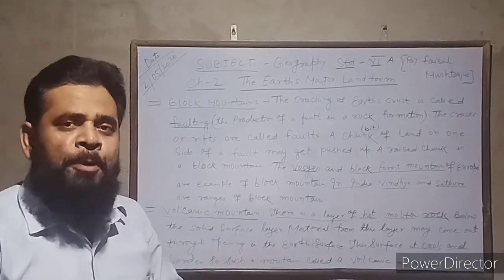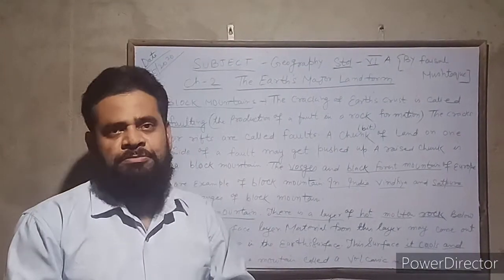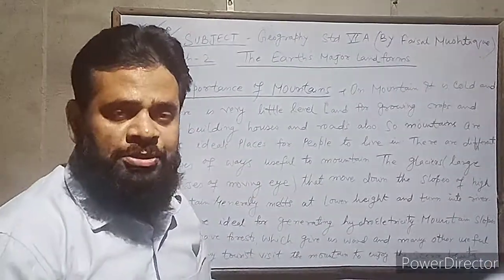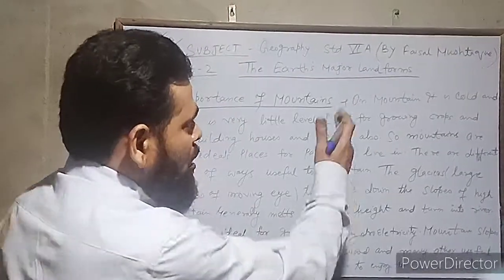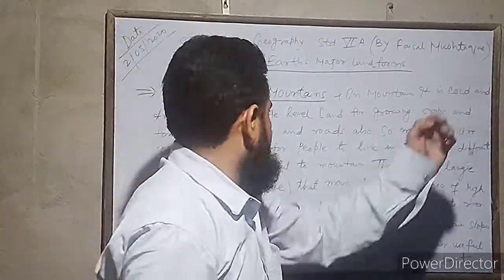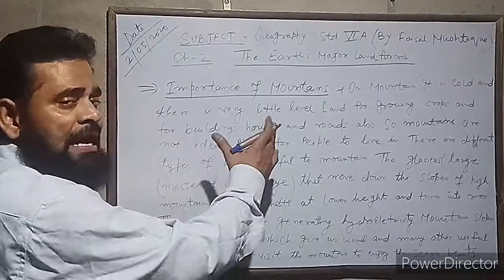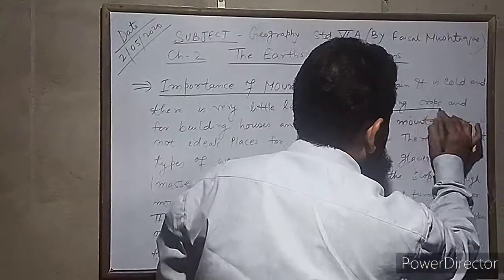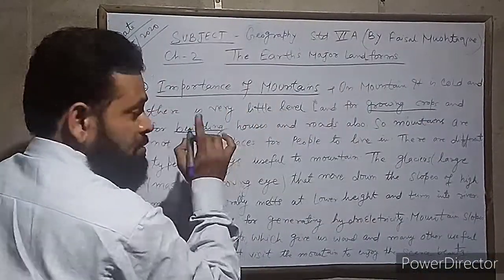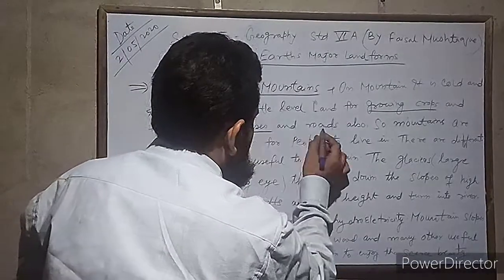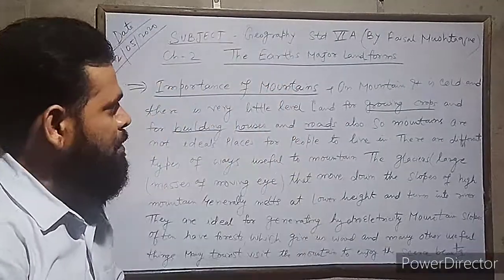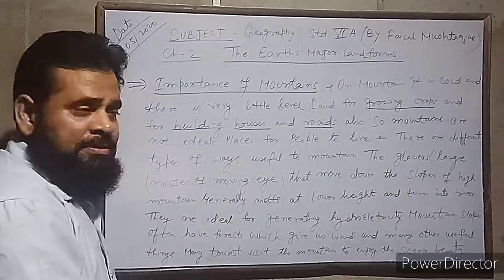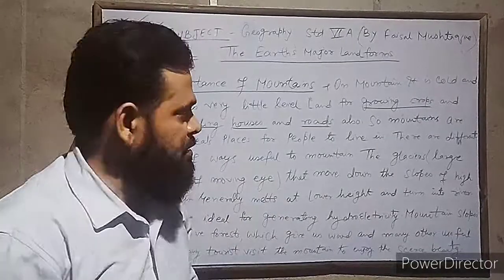Next, I will discuss the importance of mountains. On mountains, it is cold and there is very little level land for growing crops and for building houses and roads. So mountains are not ideal places for people to live in. There are different types of ways mountains are useful.